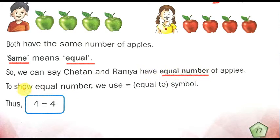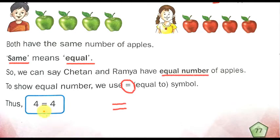To show the equal number, we use this symbol — this is called the equal symbol. Every time you write like this, that is the equal symbol. How to write: four equals to four. You can write it as four equals to four — that is the correct answer.